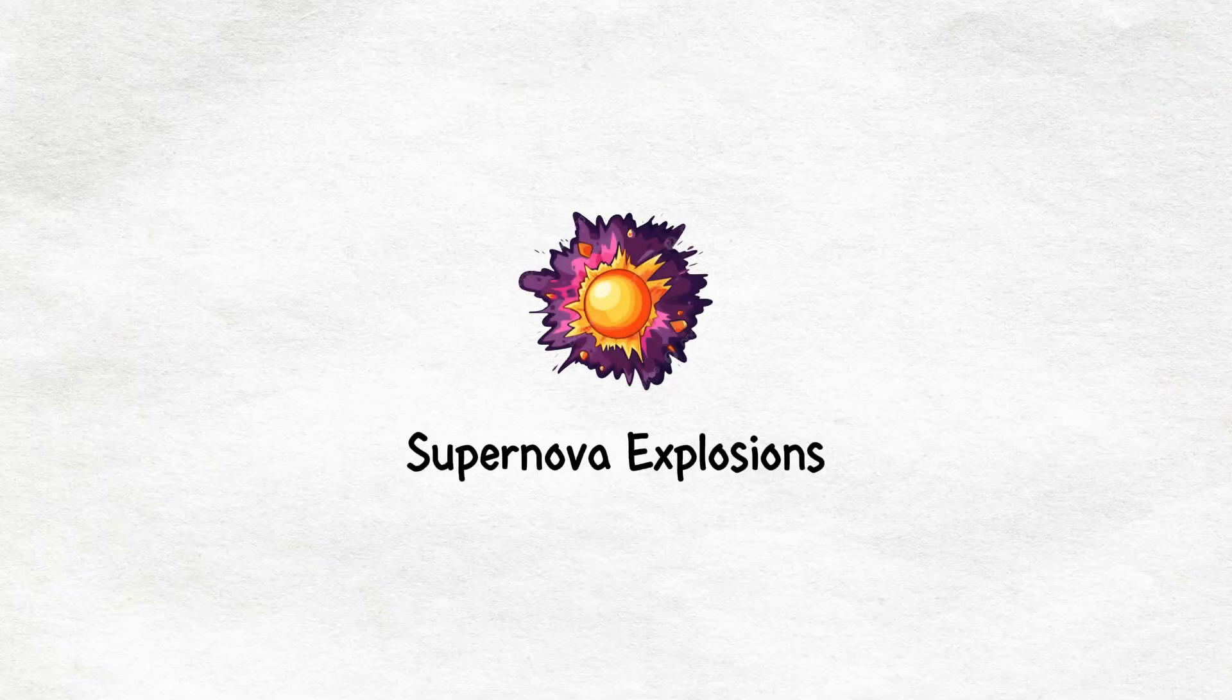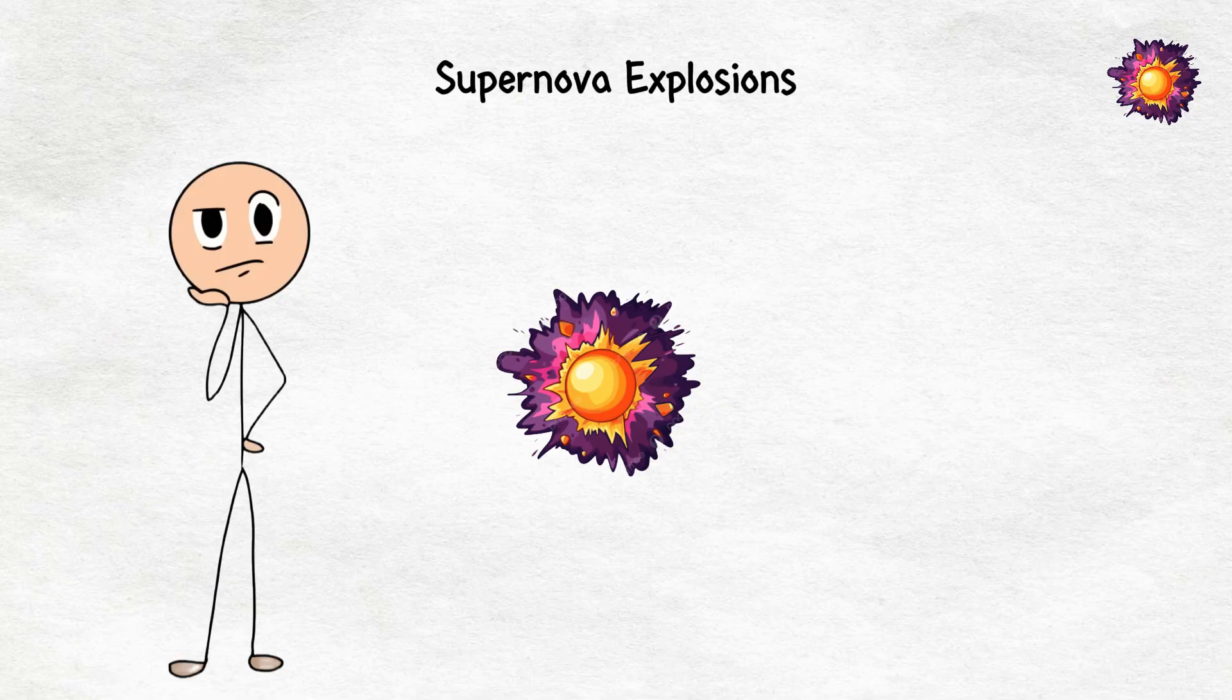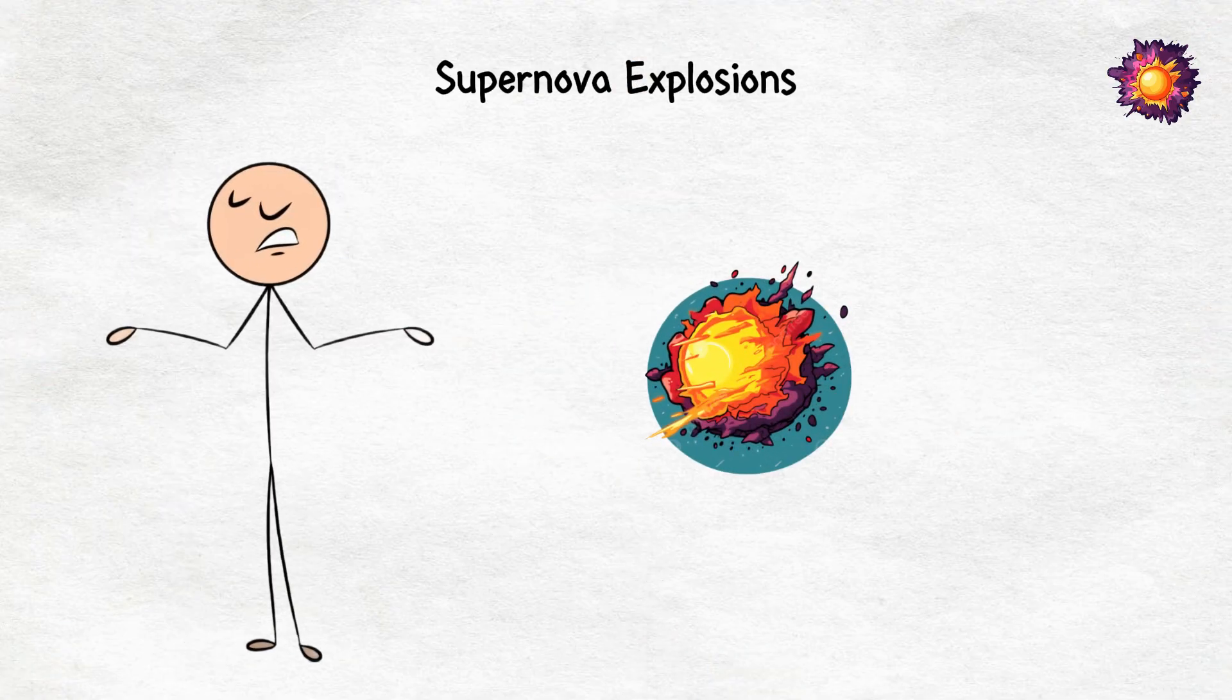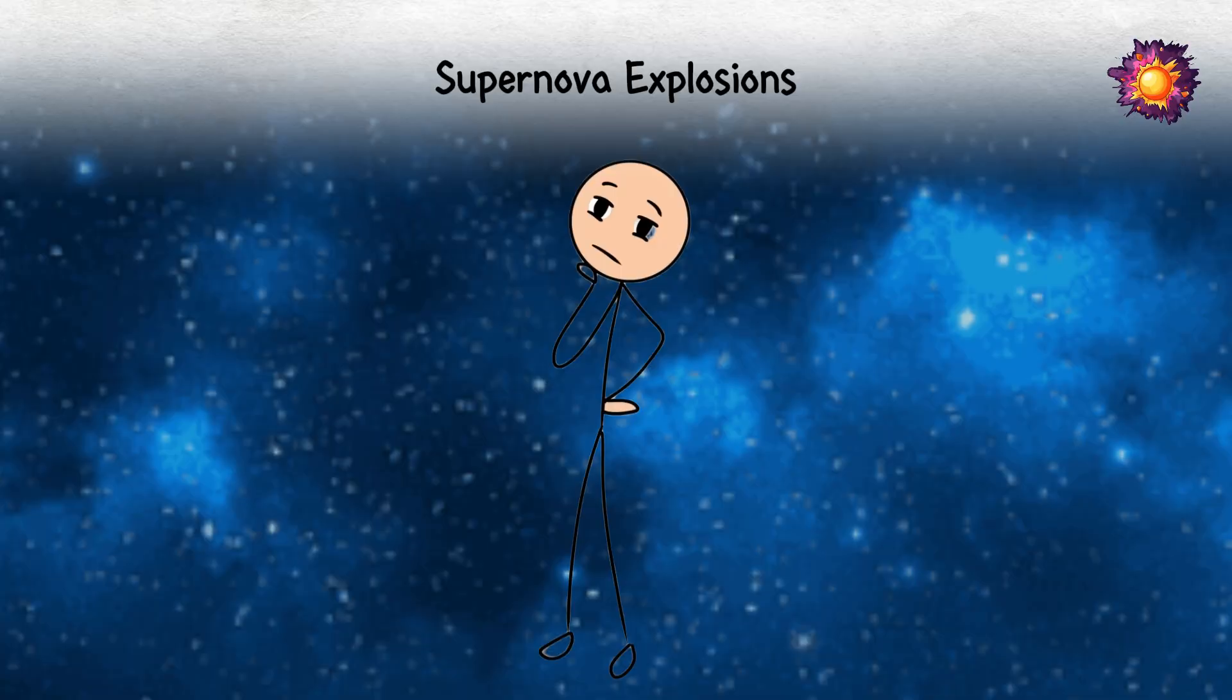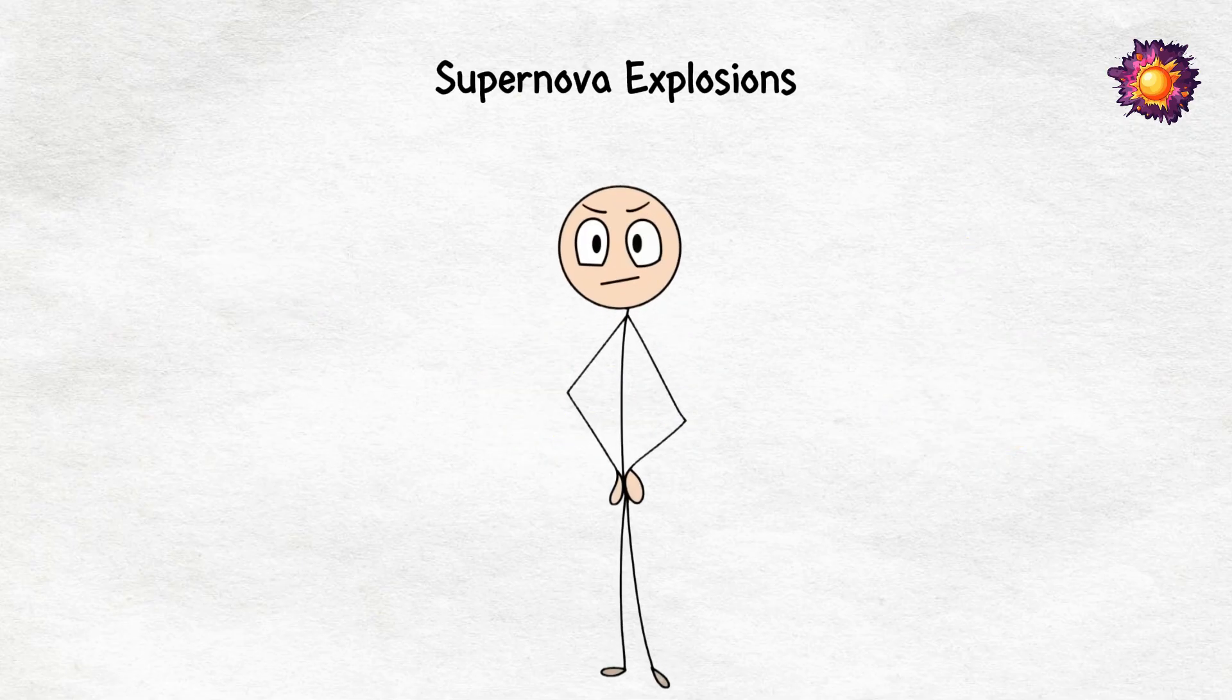Supernova explosions. If you think fireworks on New Year's Eve are cool, wait till you hear about this. Supernovae happen when a massive star runs out of fuel and collapses in on itself. And when I say collapses, I mean it triggers an explosion so bright it can outshine an entire galaxy for days, maybe even months. Just imagine lighting up the night sky with something so bright that it would make our sun look like a candle flicker in comparison.